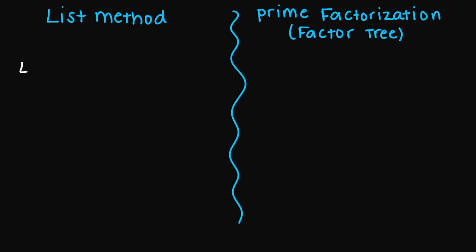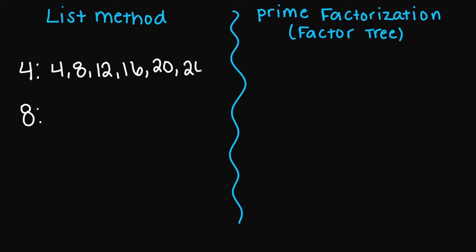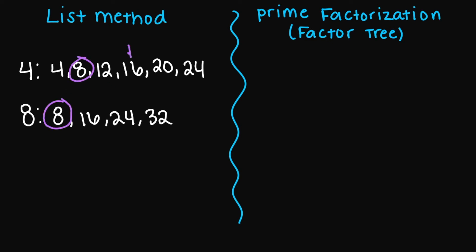So let's try four and eight. Multiples of four: 4, 8, 12, 16, 20, and 24 — we'll stop here. For eight, we have 8, 16, 24, and 32 — we'll stop here. The least common multiple between both numbers is going to be the number eight. Although I have a 16 here and a 16 here, and a 24 here and a 24 here, we are looking for the smallest common multiple. The smallest common multiple — your least common multiple — is going to be the number eight.